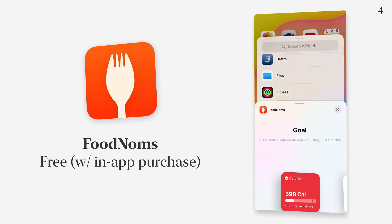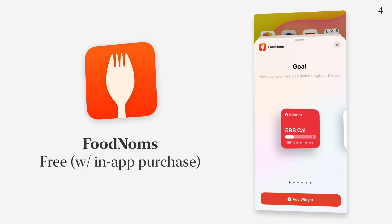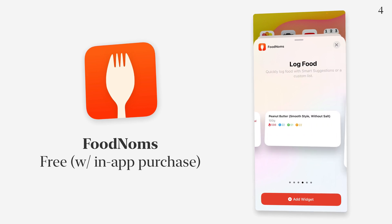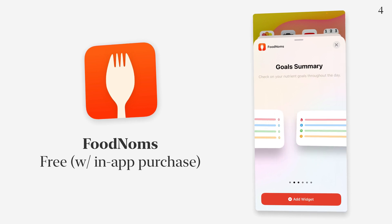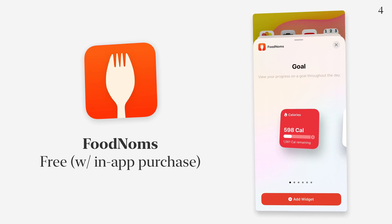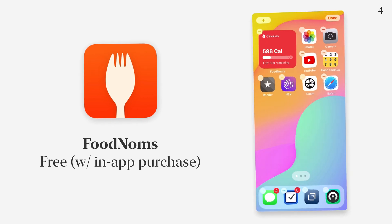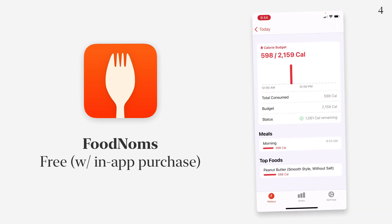Next is an app called Food Noms. Food Noms is an app for tracking your calorie intake. There are a couple of different sizes — some that show charts about how you're doing on each of your things, and then one that's just a graph of your calories. I can throw that on my home screen and then see how I'm doing throughout the day, and I can always just tap it to go into the app and enter a new entry.